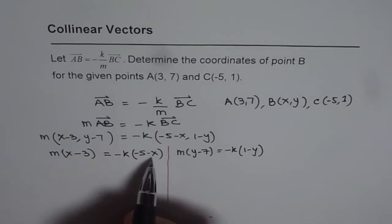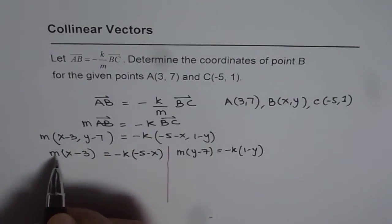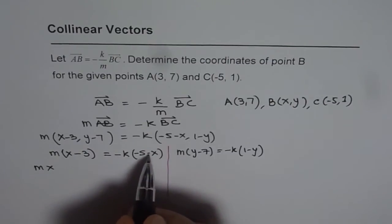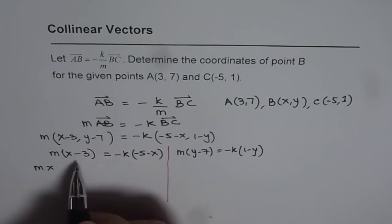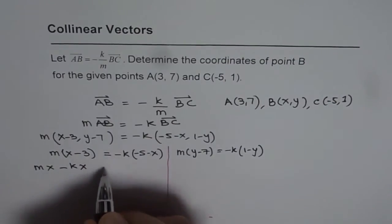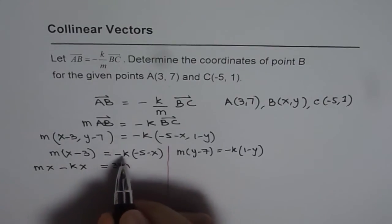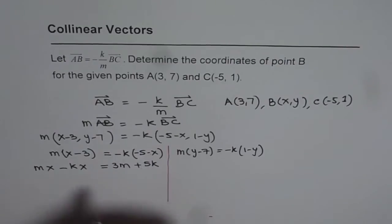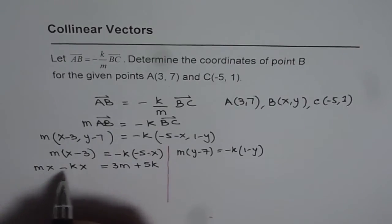Let us bring X terms together. So we get MX, and minus minus becomes plus when we take it on the left side, becomes minus again. So minus KX equals 3M plus 5K.